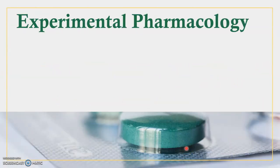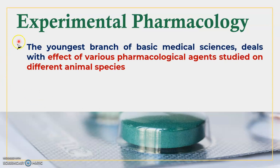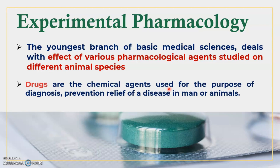The next point: what is the definition of experimental pharmacology? Experimental pharmacology is the youngest branch of basic medical science which deals with the study of the effect of various pharmacological agents studied on different animal species or with the help of animal models. This is the basic definition of experimental pharmacology.